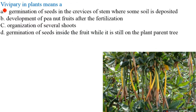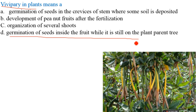Next question on viviparous plants. The germination of seeds inside the fruit while it sits on the parent plant — this is the definition of vivipary in plants.